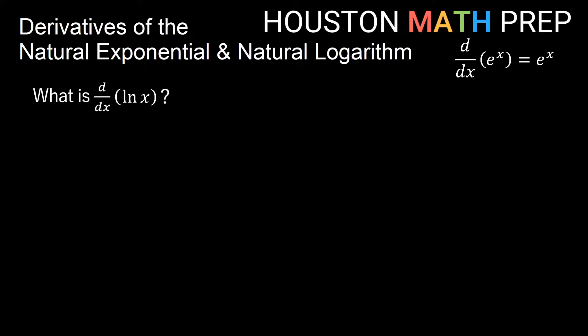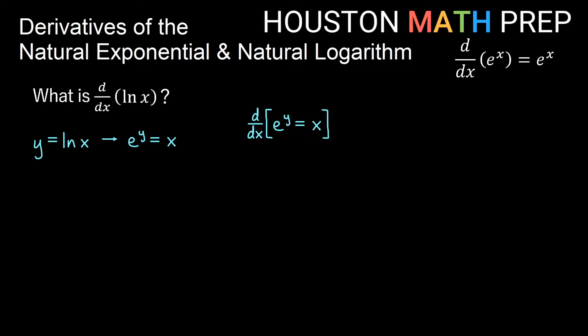Let's go ahead and work through the derivative of the natural log of x. So we're going to think of y equals ln x. I'm going to rewrite this in exponential form. We could go ahead and rearrange this and say that's the same as e to the y equals x — you could take exponential base e of both sides. And what we'll go ahead and do from here is actually use implicit differentiation. So I want to take the derivative of this entire equation with respect to x. So I have the derivative with respect to x of e to the y equals x.